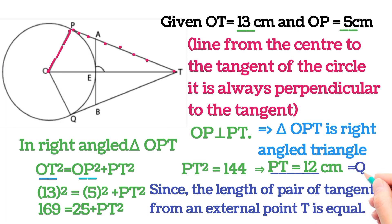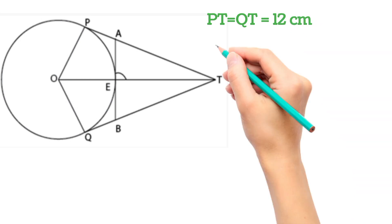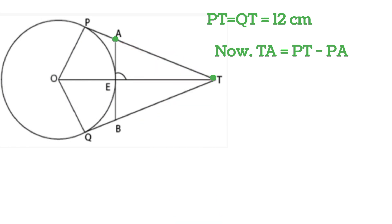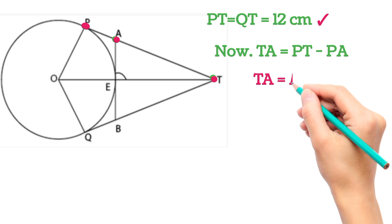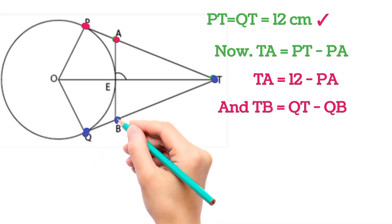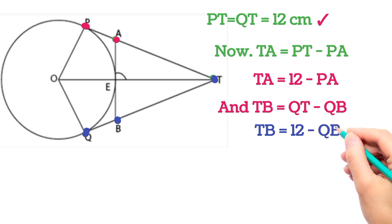Tangents from an external point to the same circle are equal, so PT = QT = 12 centimeters. Now, TA can be written as PT minus PA, so TA = 12 minus PA. Similarly, TB = QT minus QB, so TB = 12 minus QB.